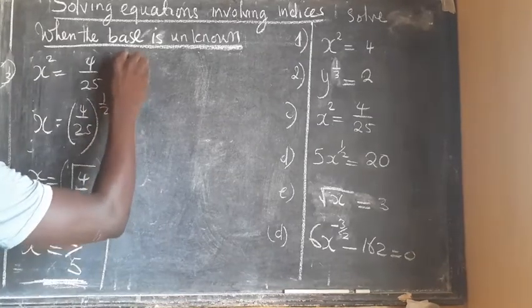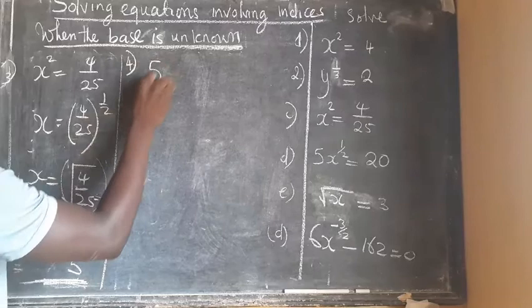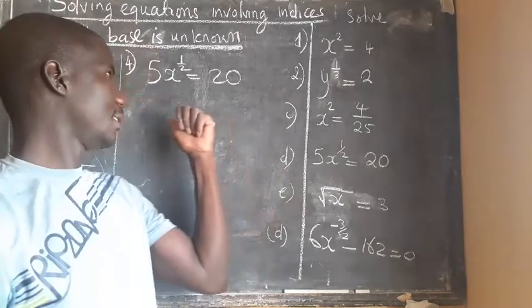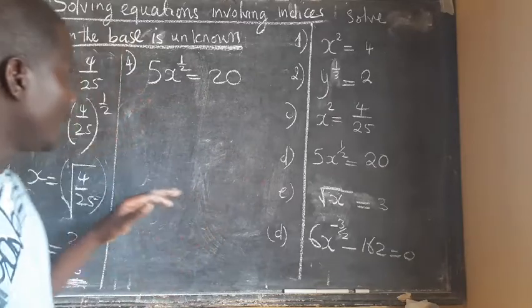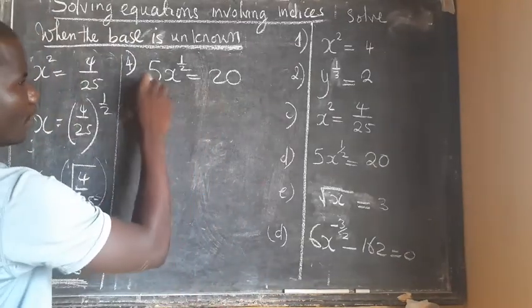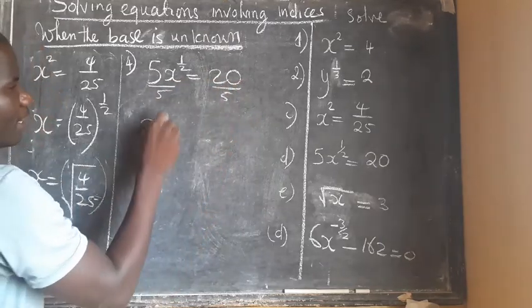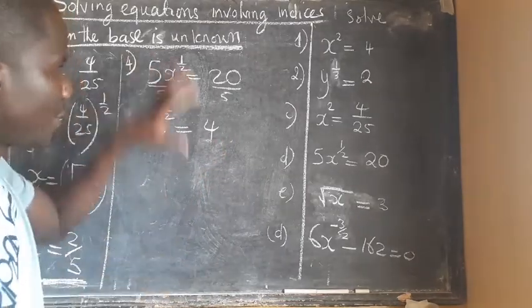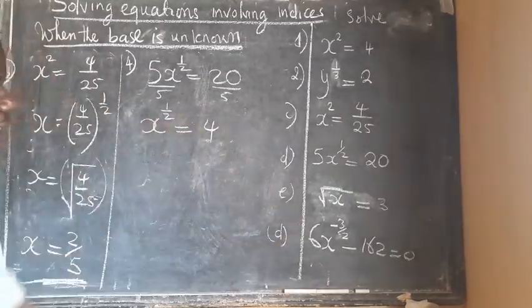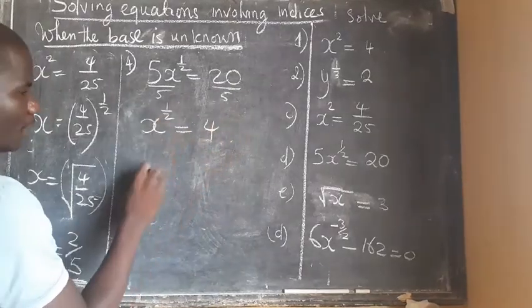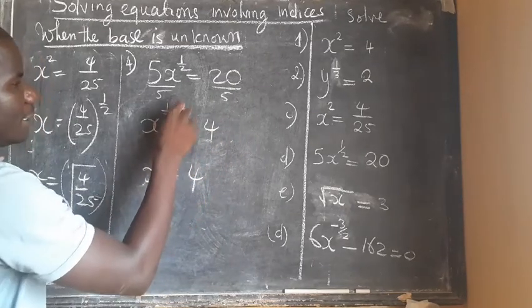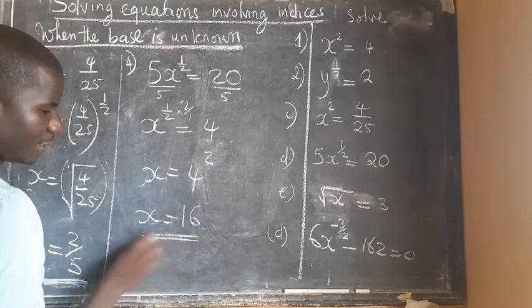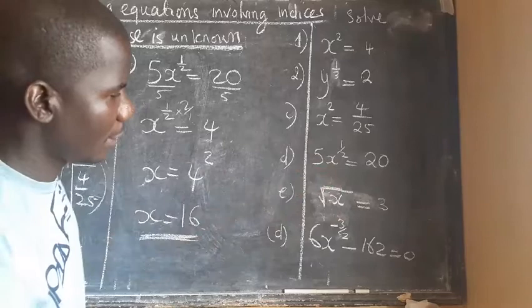The next example involves 5x to the power one over two. This one is interesting — the first thing to do is get rid of the coefficient. We divide both sides by five, simplifying to get x to the power one over two alone on one side. Now we apply the rule: take the reciprocal of one over two, which is two over one — that is just 2 — to the other side. Four multiplied by four gives us sixteen, so x equals 16.